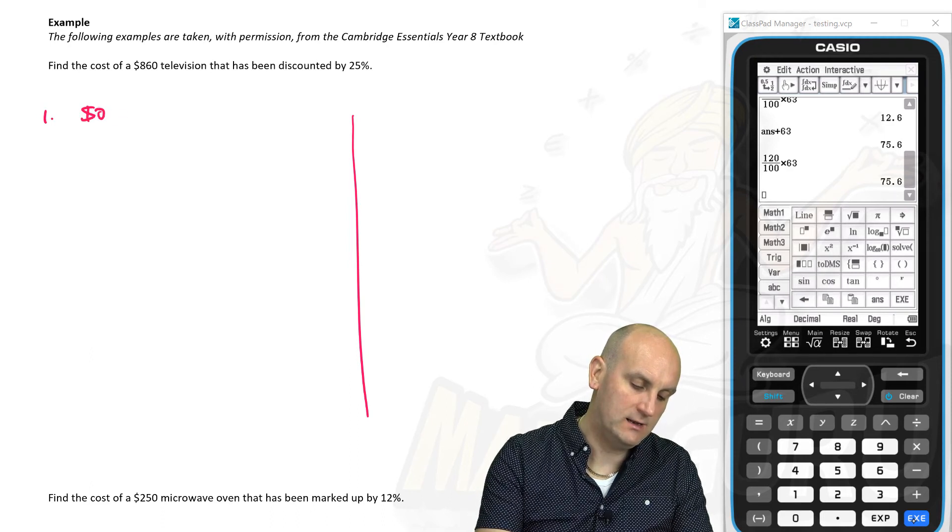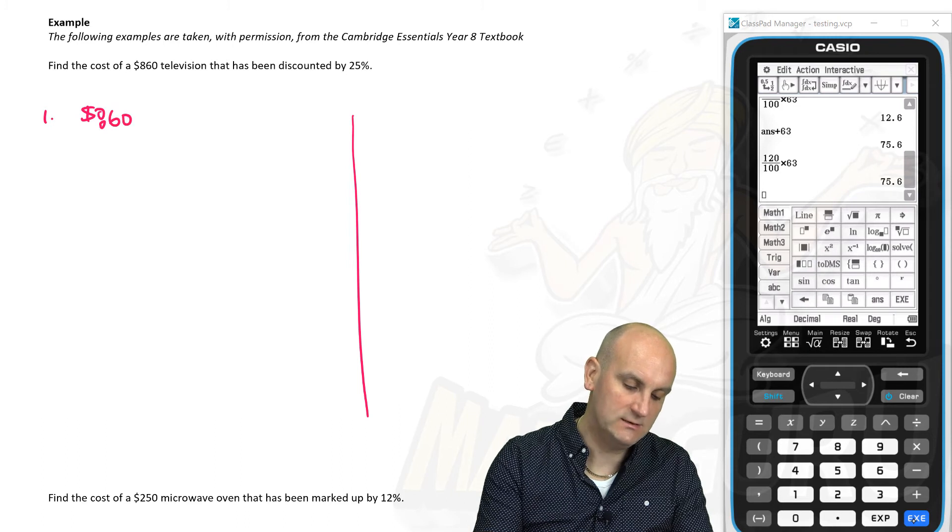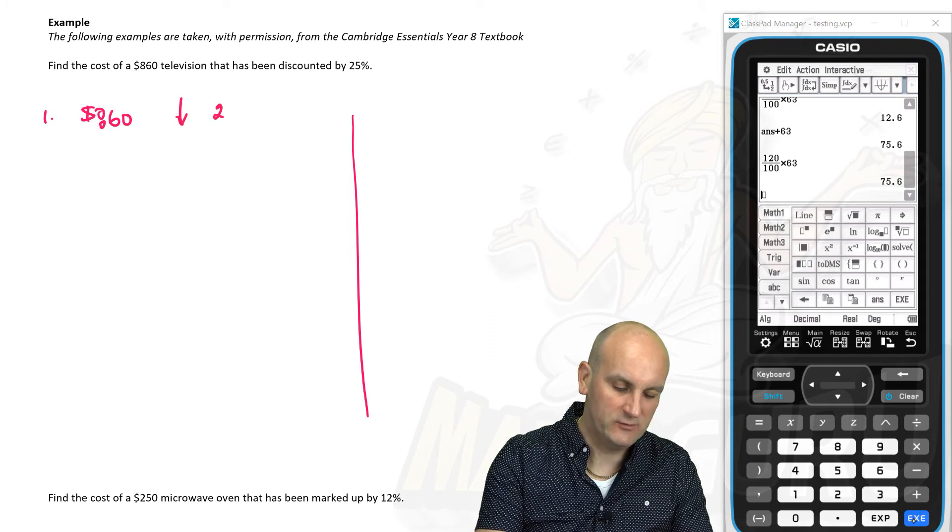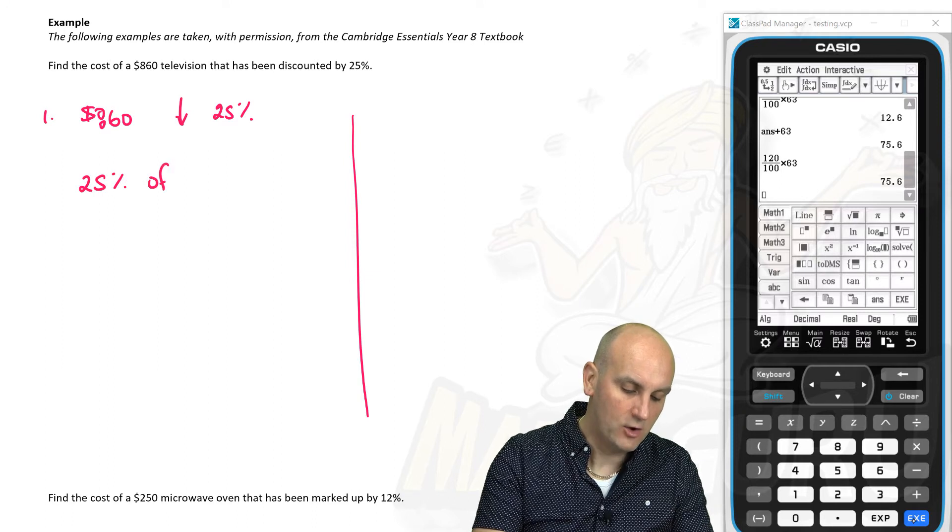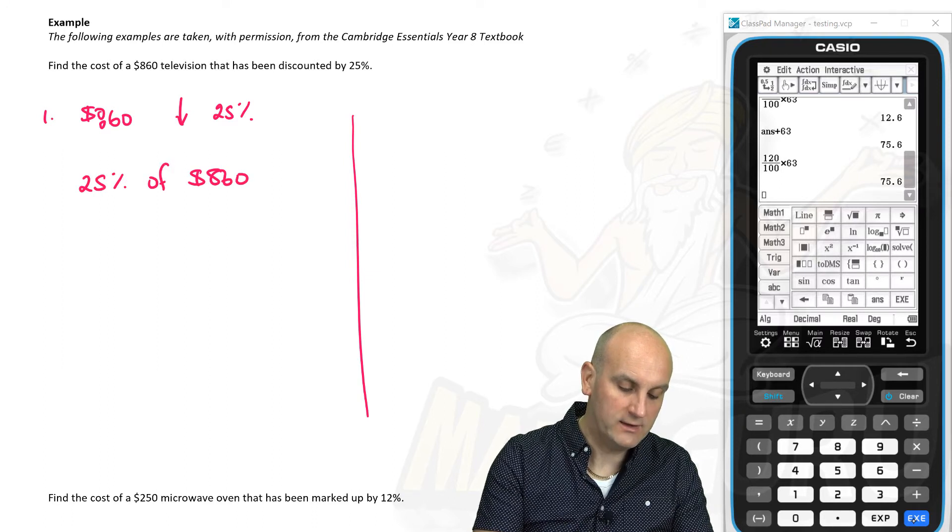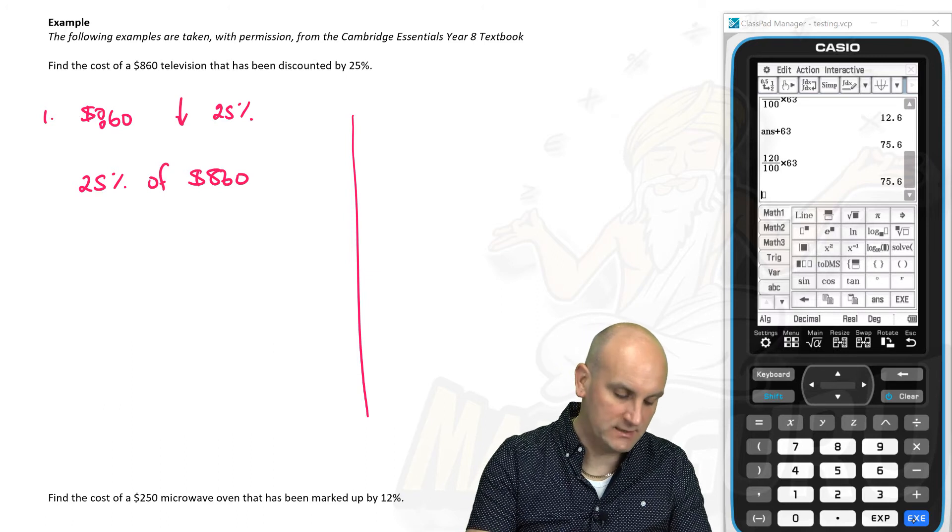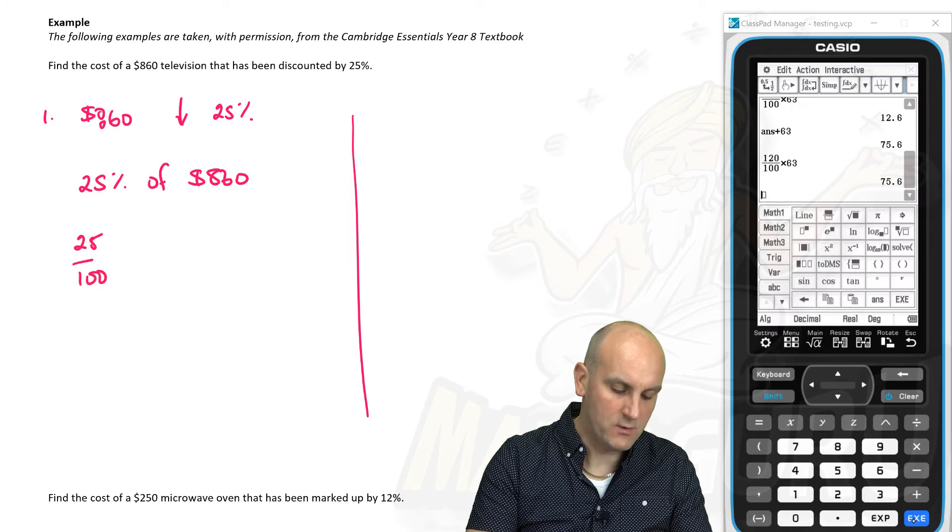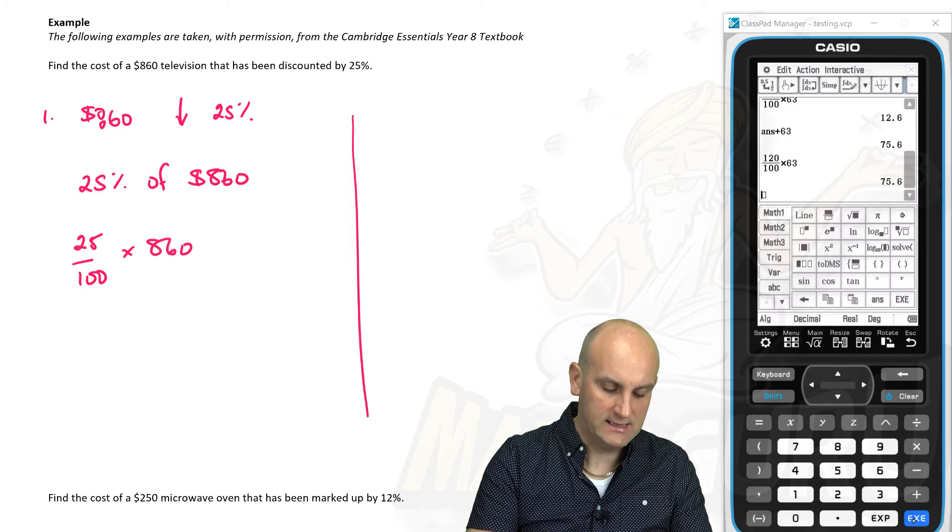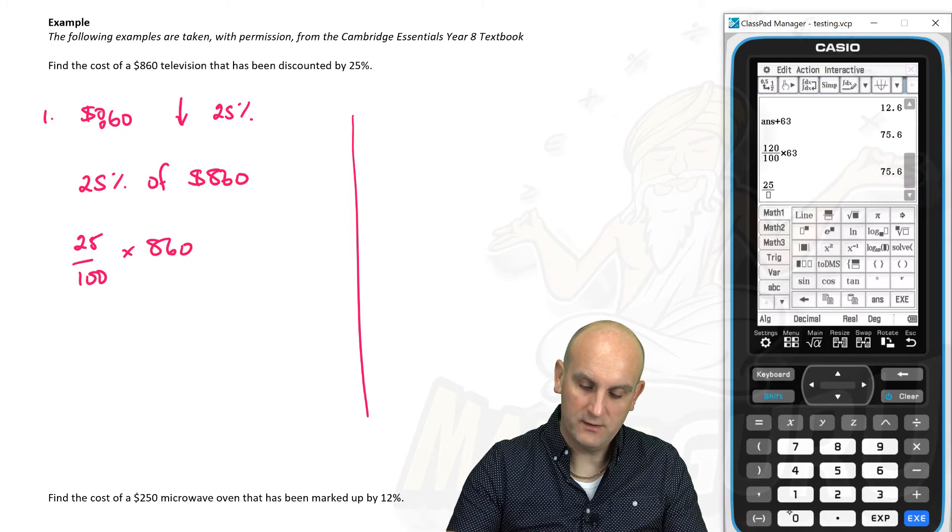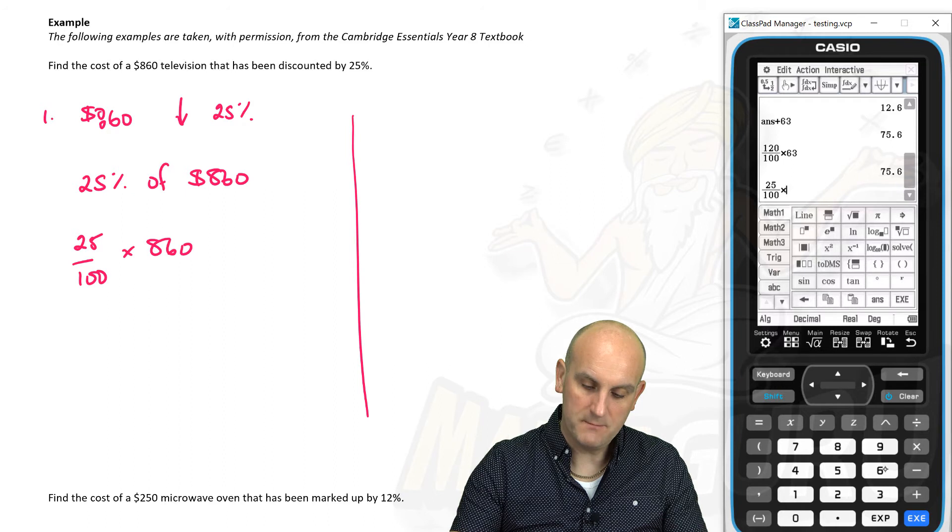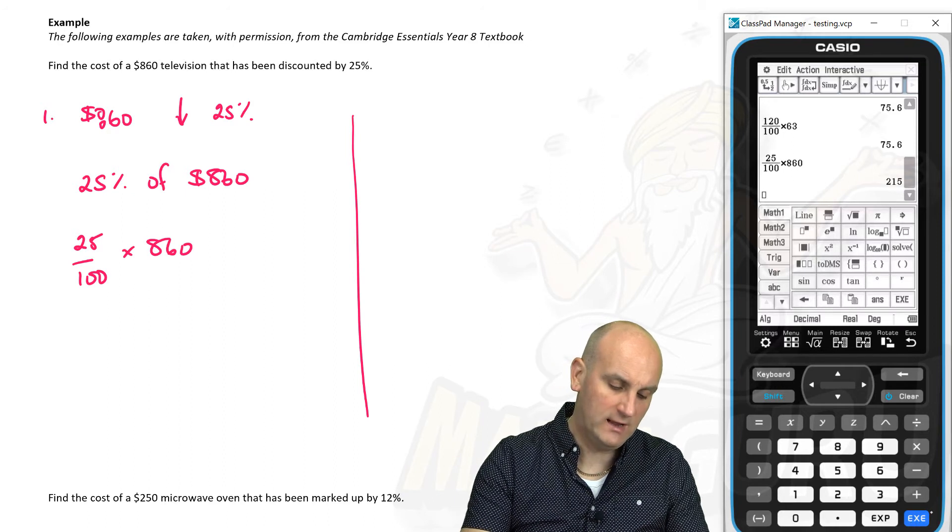Number one then. We'll do method number one. So we've got $860, and it's been discounted by 25%. So first things first. Find 25% of $860. We can do that because that's 25 divided by 100 times $860. I can do this. 25 divided by 100. And we're going to multiply that by 860. And we get $215.